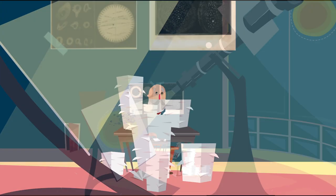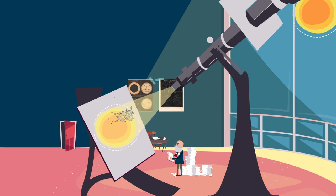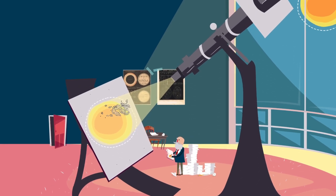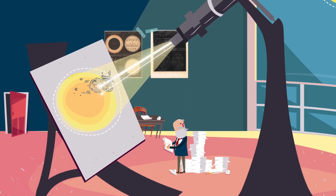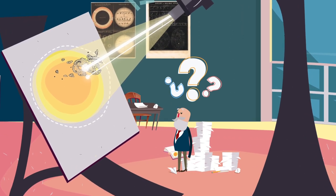Und dann, am 1. September 1859, geschah etwas Ungewöhnliches. Neben dem Sonnenfleck, den er gerade beobachtete, tauchten zwei sehr helle Lichtstrahlen auf.